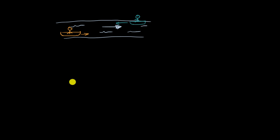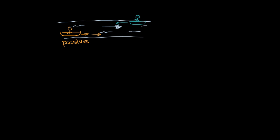Think about which person is going to have to expend more energy and which person is going to be more passive. If you are going with the flow of current, as the person in yellow, they don't even have to take their paddles out — they can just take a nap. The person in blue is going to have to work really hard to paddle just to stay in place and even harder to go against the current. This is really a metaphor for active versus passive transport.